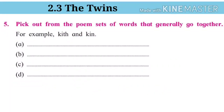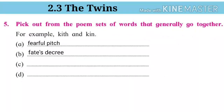Next question: Pick out from the poem sets of words that generally go together. For example: kith and kin. Answers: A — fearful pitch. B — fate's decree. C — domestic life. D — turn the tide.